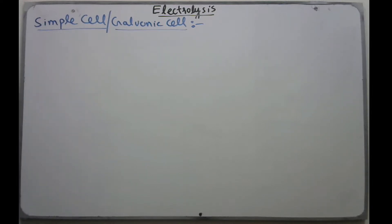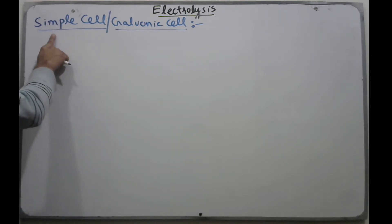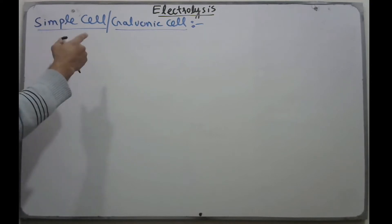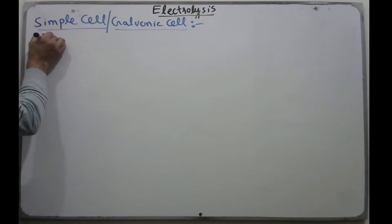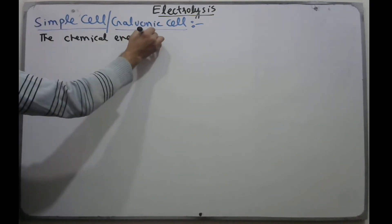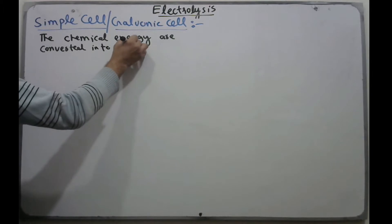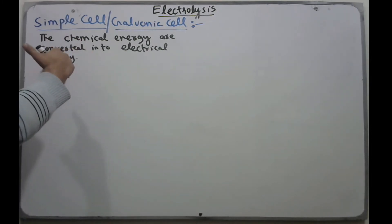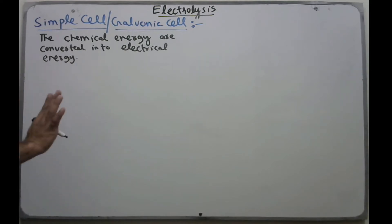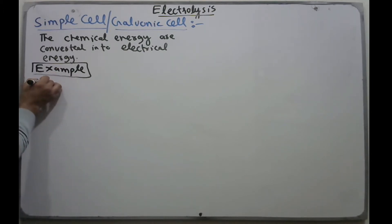Today we discuss simple cells or galvanic cells. In these cells, chemical energy from chemical reactions is converted into electrical energy.